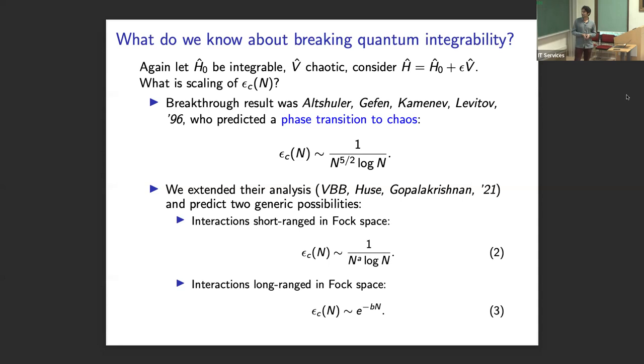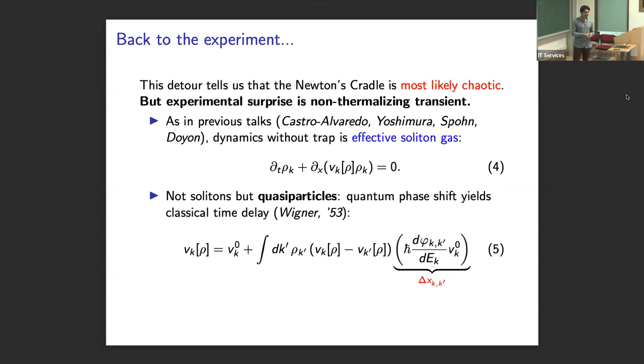So either way, using physics-style arguments based on delocalization theory, we get these predictions. And the reason for this detour is it tells us that the problem which motivated all of this, the quantum Newton's cradle, it's most likely chaotic. But maybe that's what's not interesting about the model. The interesting thing experimentally was this non-thermalizing transient.